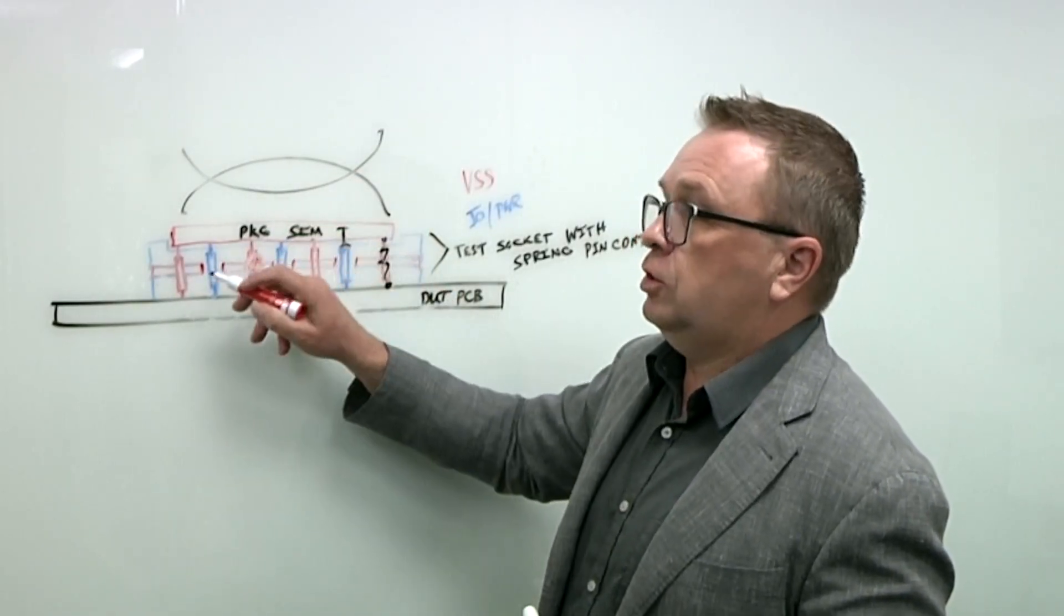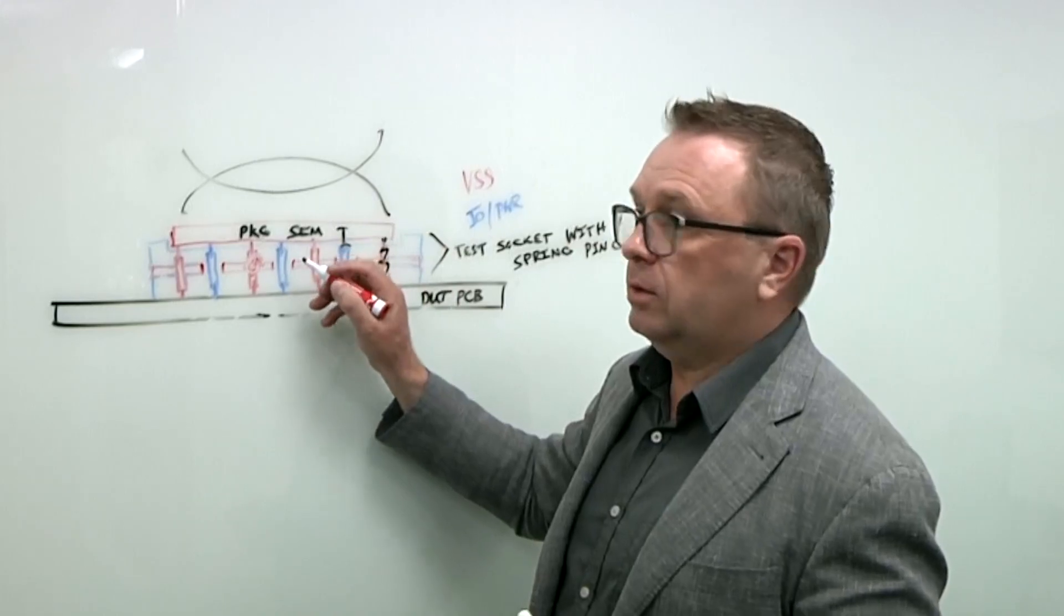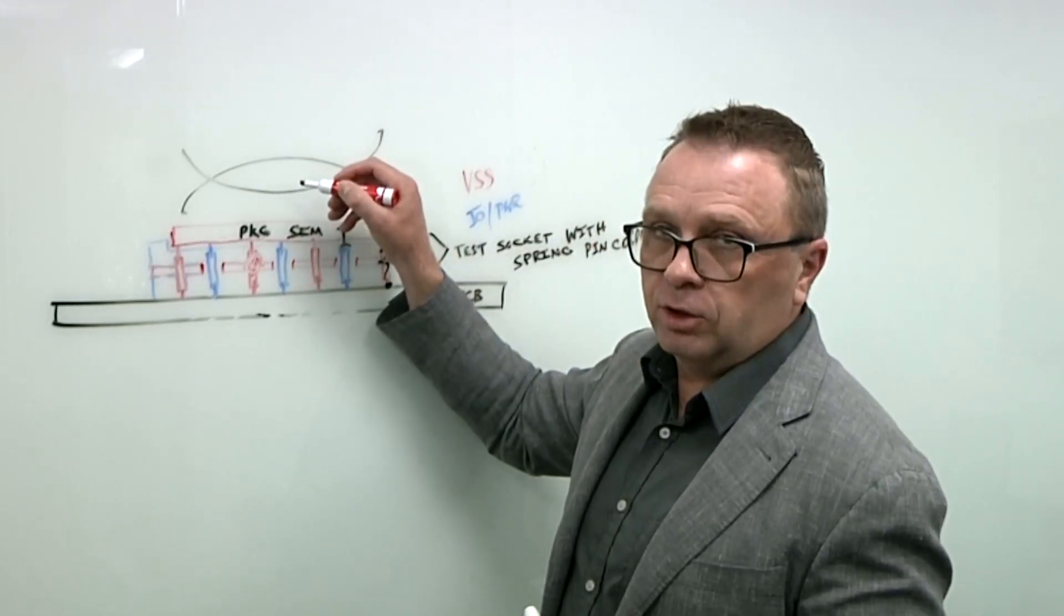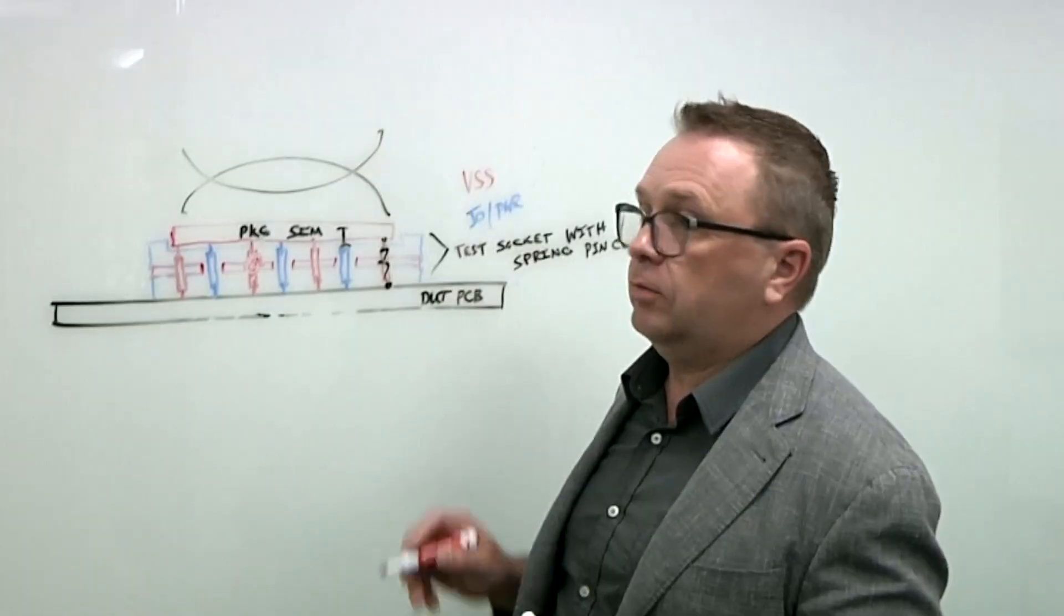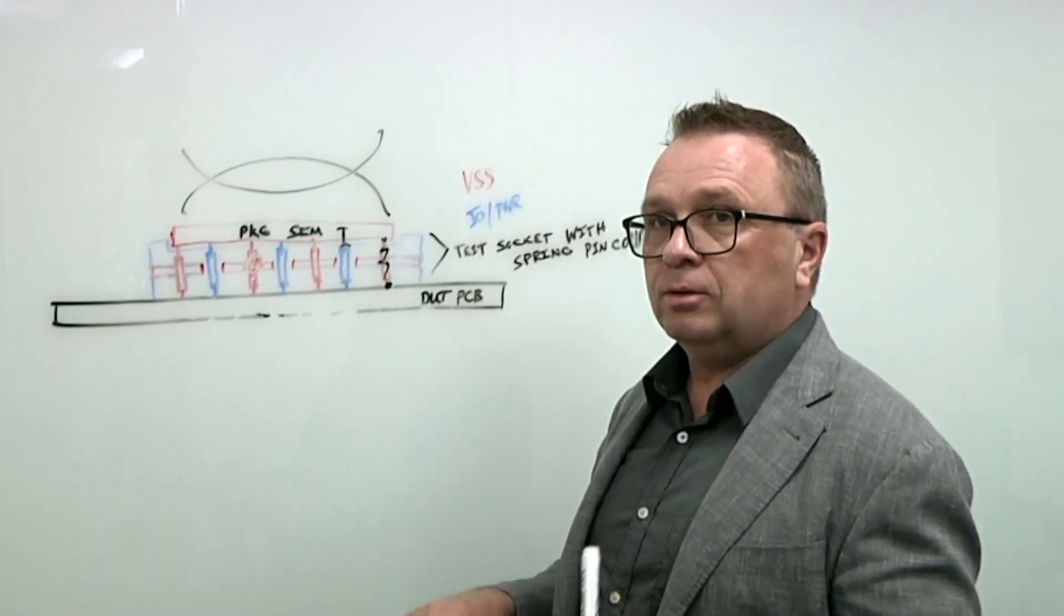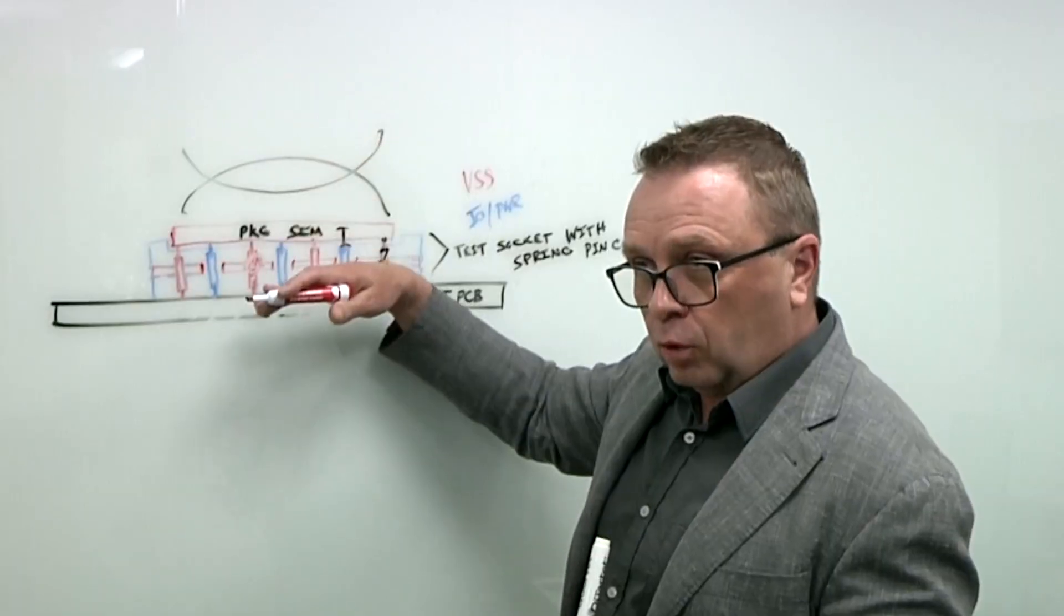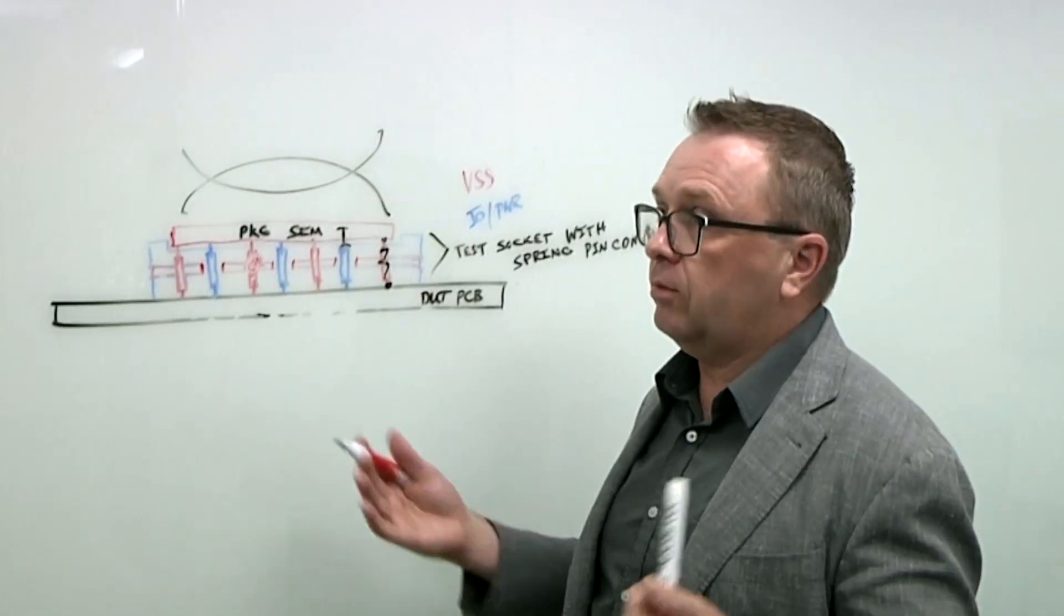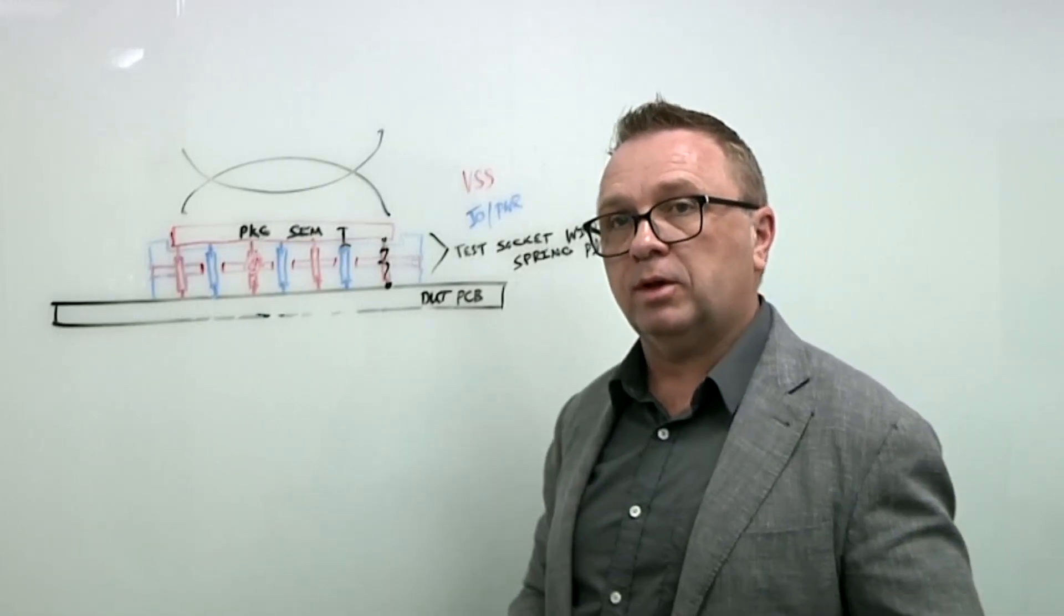So choosing the right socket is very important to make sure that the pins, the socket design match what you need from a coplanarity spec for your package as well. If you don't have that right, you either lose yield or you potentially have to compress harder than needed to get contact. And then now you have things like die cracking or package damage that can happen.